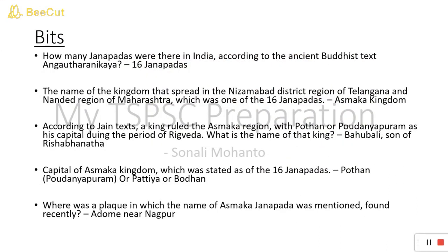Now let's look at practice questions. First: How many Janapadas were there in India according to the ancient Buddhist text Anguttara Nikaya? The answer is 16 Janapadas. Second: Which kingdom spread in the Nizamabad district of Telangana and Nanded region of Maharashtra? It is the Asmaka kingdom. Third: According to Jain text, a king ruled Asmaka region with Potan or Paudanyapuram as his capital — that king is Bahubali, son of Rishabhanatha, the founder of Jainism.